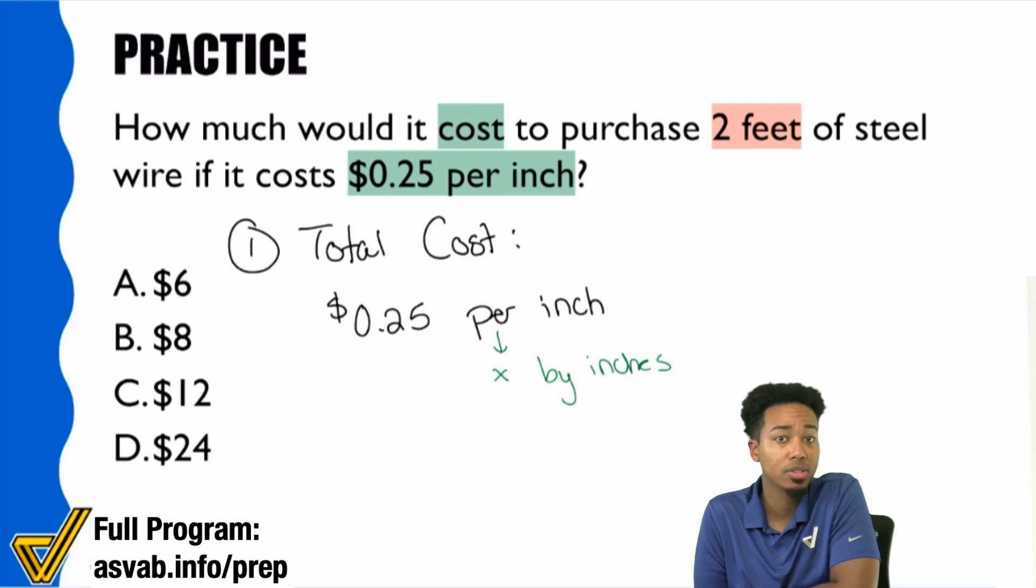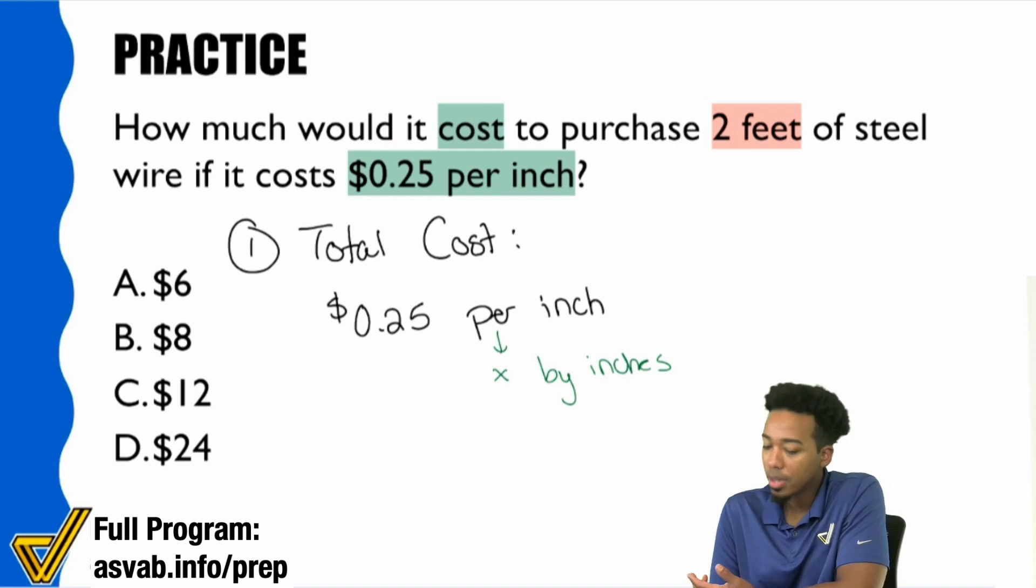And so this is that moment where I'm going to bring everything full circle. Do you remember how in the beginning of class I told you that unit conversion word problems are really just regular word problems with one extra step? Is that starting to make sense to you now? If you had the number of inches, that'd be a quick multiplication problem. That'd be 0.25 times the number of inches and you're done. But it just so happened that they gave you a different unit, and all you have to do is convert.